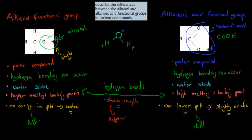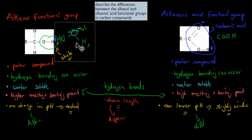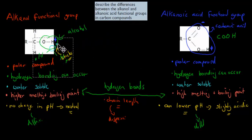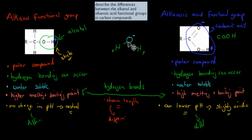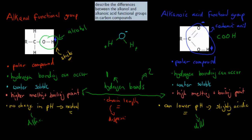There's also a difference in melting and boiling points between the two. Even though both are higher than water, alkanolic acids can form two hydrogen bonds — one between a negative and positive site, and one more — whereas the alkanol functional group can only form one hydrogen bond. Since more hydrogen bonds means a higher melting and boiling point, alkanolic acids have a slightly higher melting and boiling point, which we'll cover more in the next video.